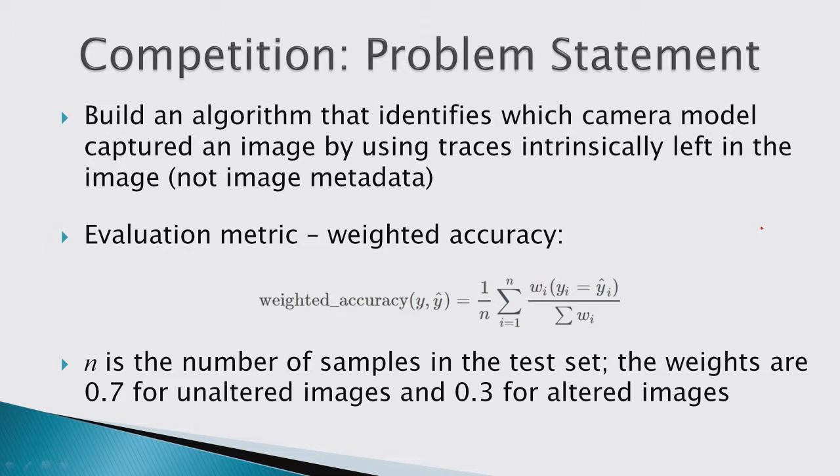Basically it's accuracy, but there were two types of samples in the test set — some unaltered and some altered in some way — and the weighted accuracy gave more weight to the unaltered images than to the altered ones.